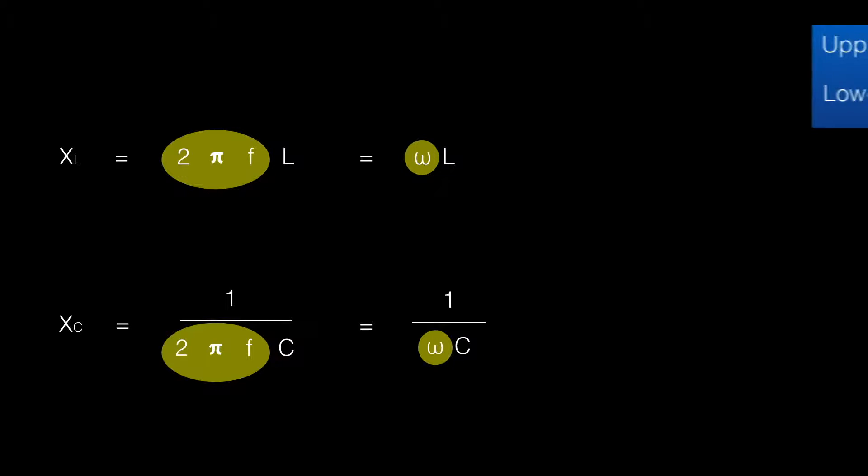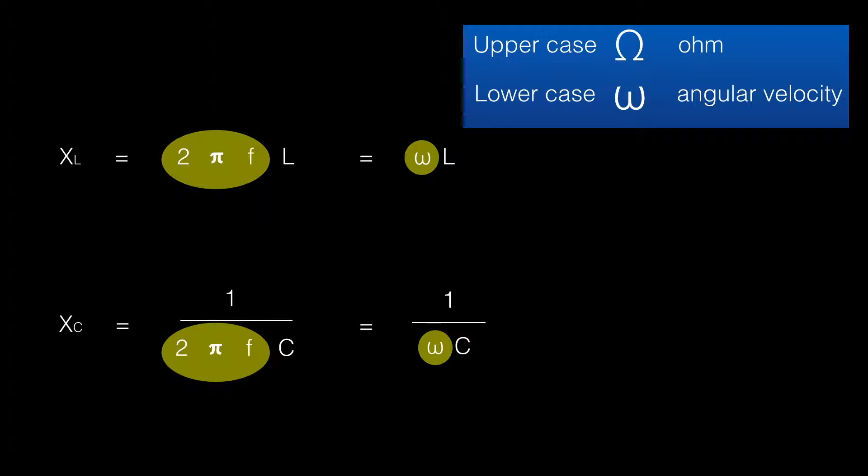We've simply replaced the 2 pi f with omega. I should note that we talk about the Greek letter omega in terms of the ohm, the uppercase omega capital, and the lowercase which looks a bit like a w is for angular velocity, that 2 pi f term.